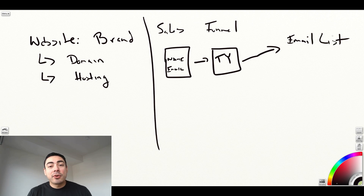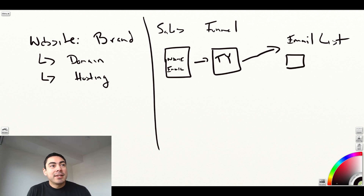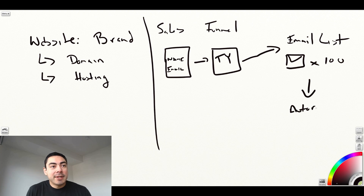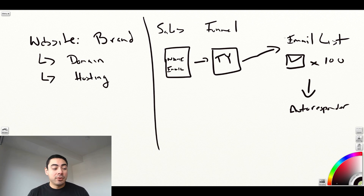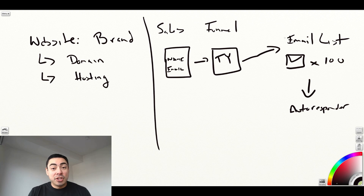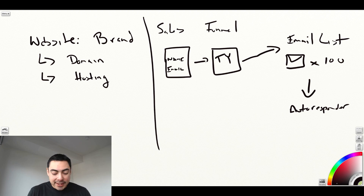Once people are on your email list, you communicate with them through an autoresponder — a program linked to your email list. Every time somebody submits their email, it gets sent to the autoresponder, where you can send out mass emails to hundreds of people at a time. You can't do this through your personal Gmail account because it will flag you for sending too many emails. You need an autoresponder to build your email list. The tool to build the actual sales funnel is usually called a lead page builder.